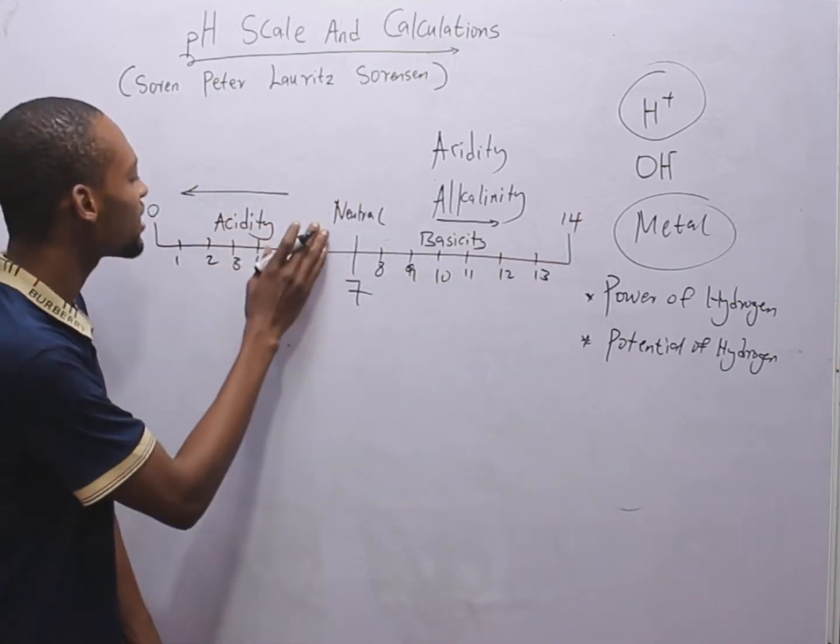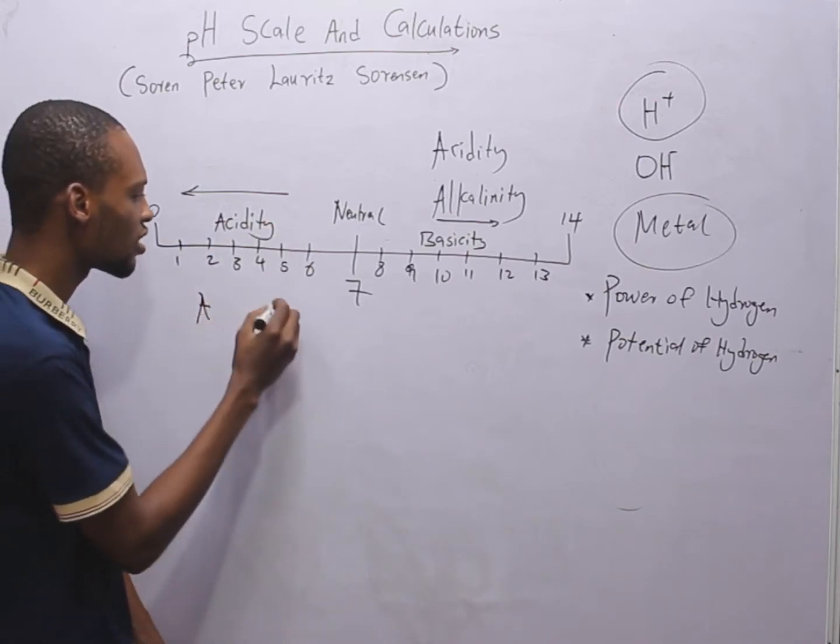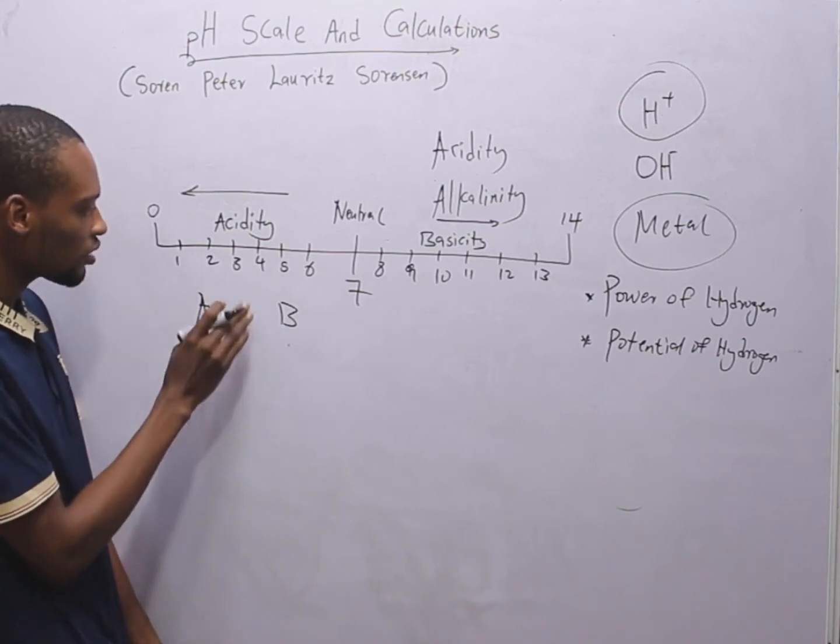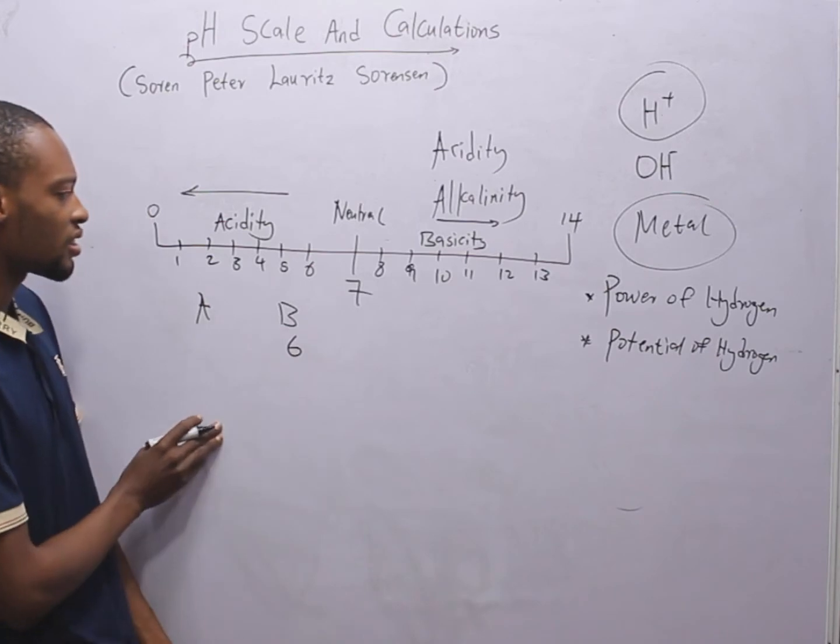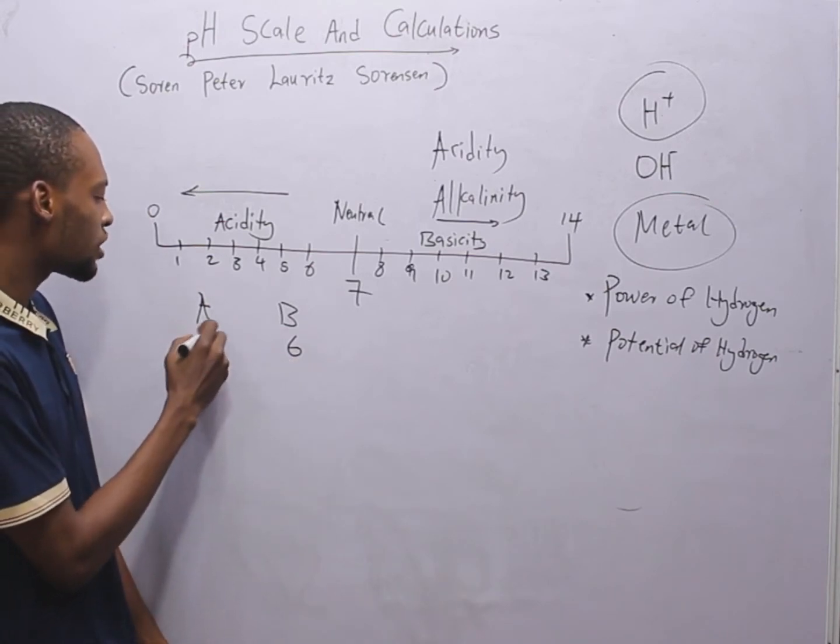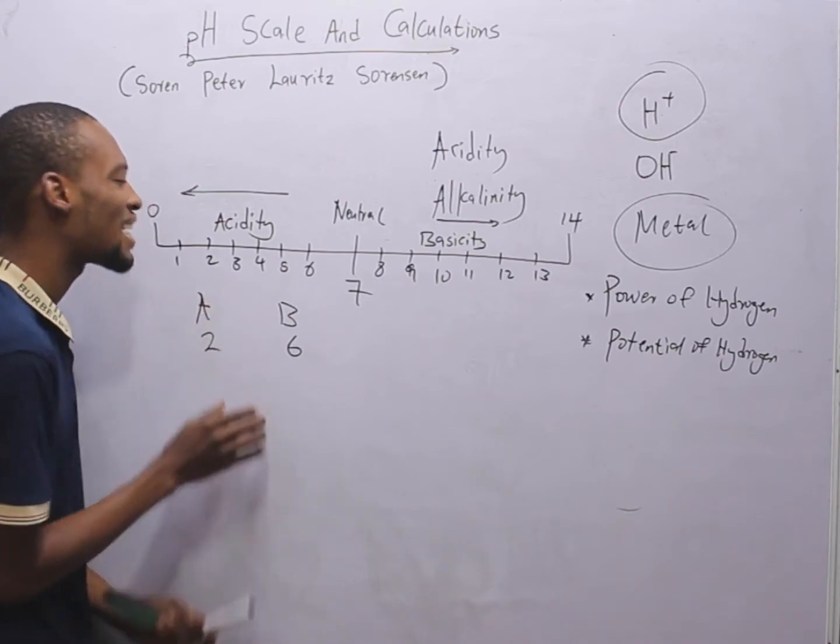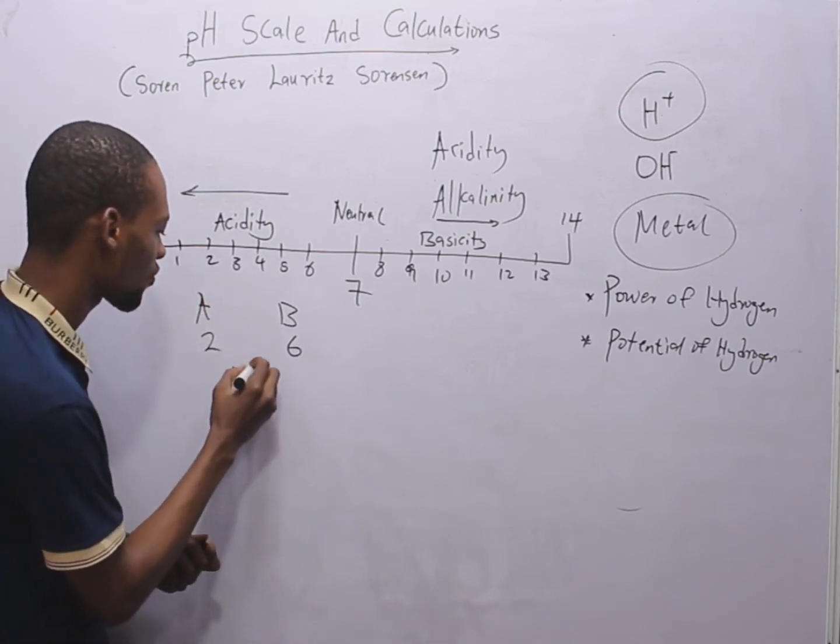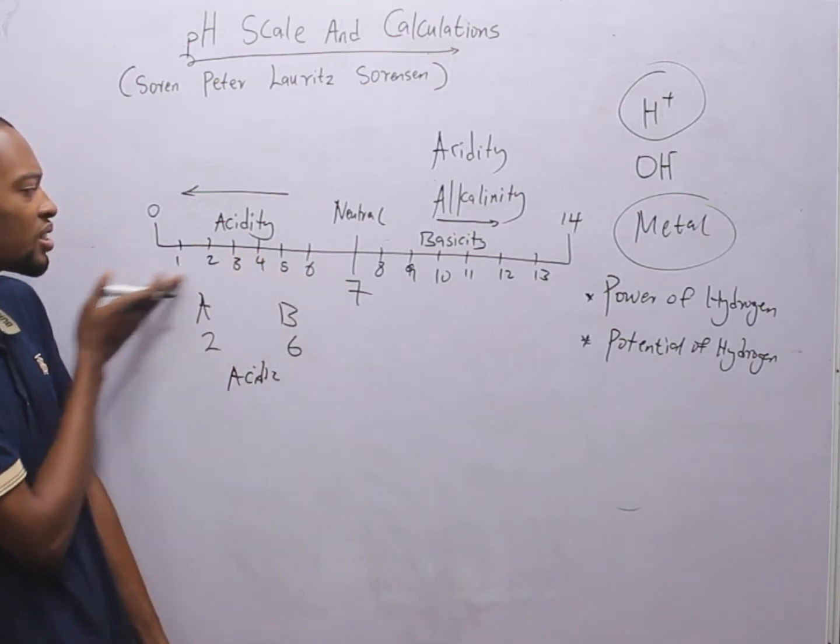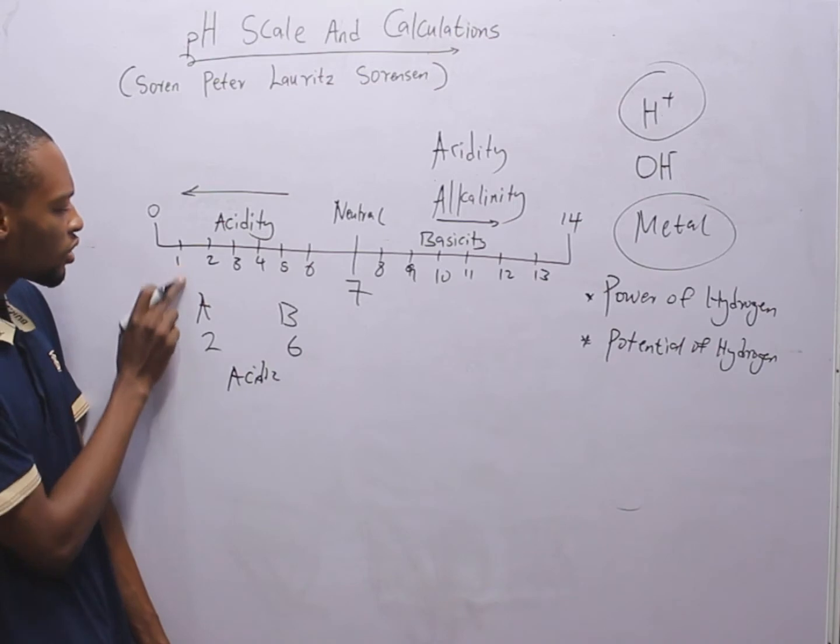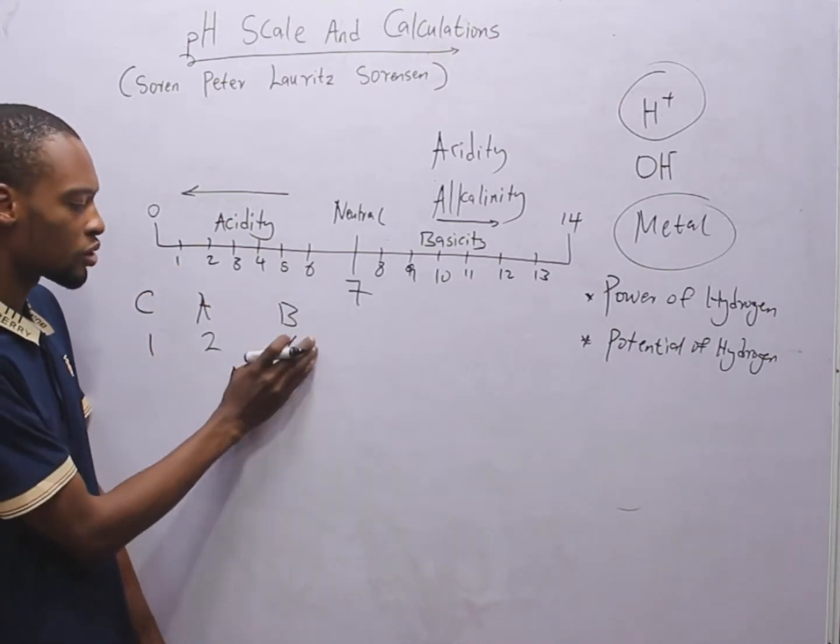Now, acidity increases this way. What does it mean? If you have solution A and solution B, solution B is, let's say the pH is six. Solution A, let's say the pH is two. Solution A is more acidic than solution B because acidity increases this way. If solution C has pH one, it is more acidic than solution B.